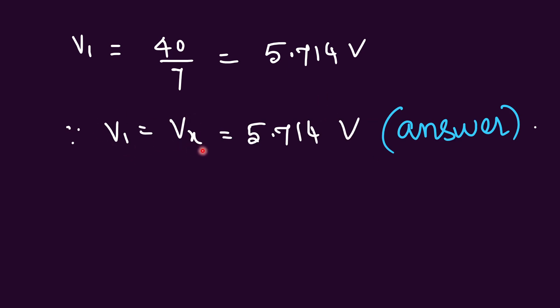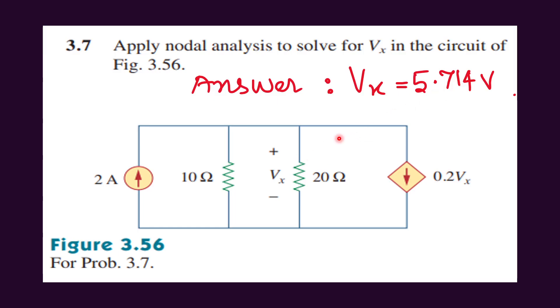Already we know that V1 is nothing but this Vx. So it is equal to 5.714. This is the answer we get. Thank you.